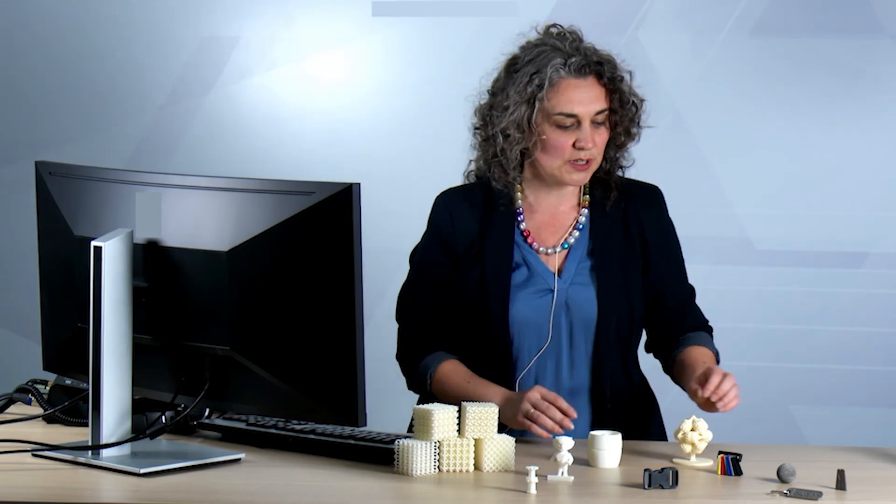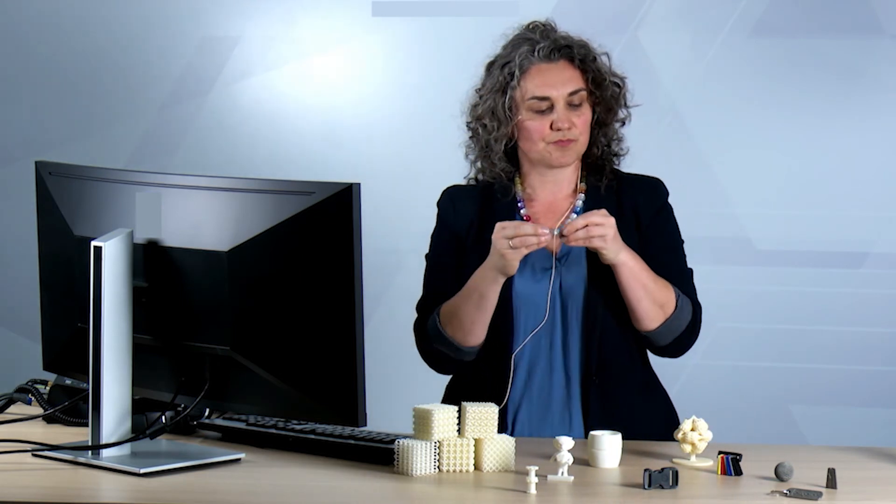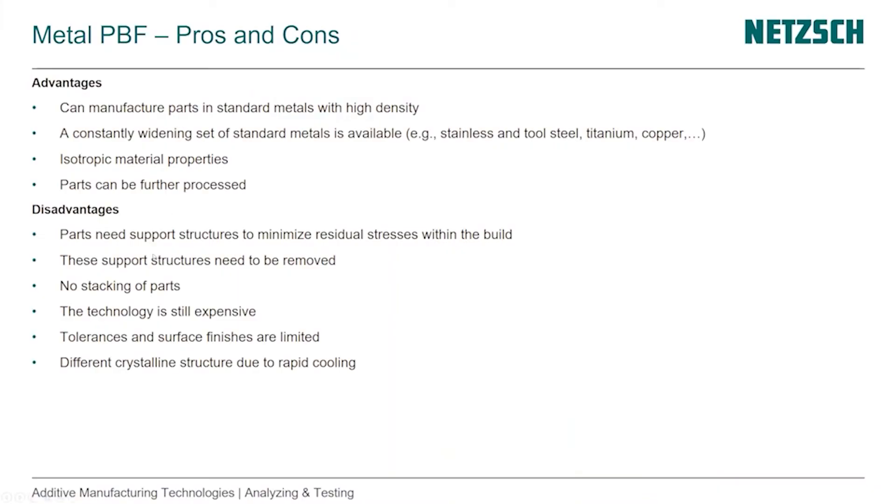Disadvantages are definitely that the parts need support structures. So when we look at these here, you see that we can get delicate features or here we can get intricate inside channels, we can blow that powder out, but we still need support structures in a big way that require to be removed afterwards and they use more material that we need to recycle. So the removal is important and that we can stack parts, so we can't get as much parts in a powder bed then we can with the polymer parts. The technology is still expensive, so machines are quite a heavy price tag.